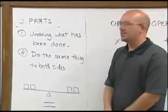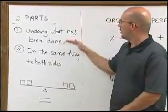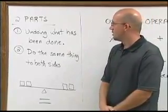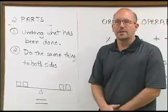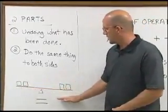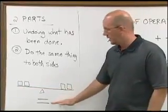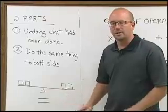In solving equations, there are two basic things to remember. Number one, we must undo what has been done to our variable. And number two, we must do the same thing to both sides. Always keeping in mind our equation must be this balanced teeter-totter, the equal sign representing our teeter-totter.